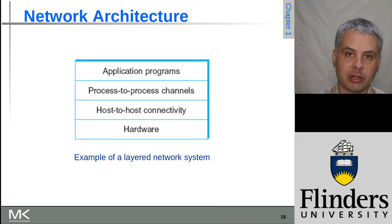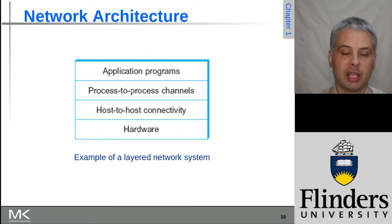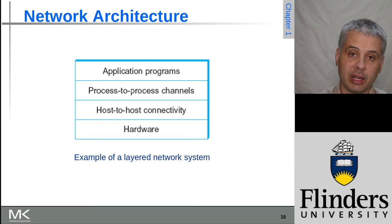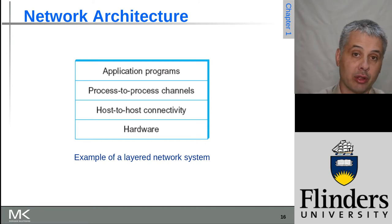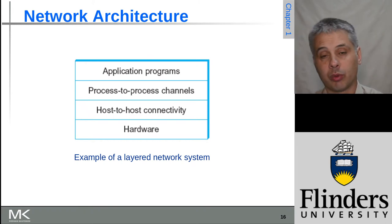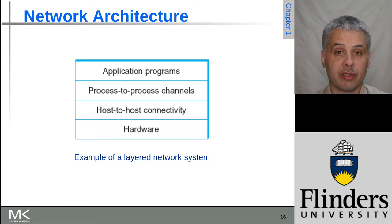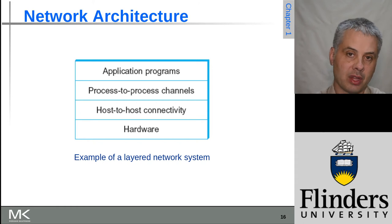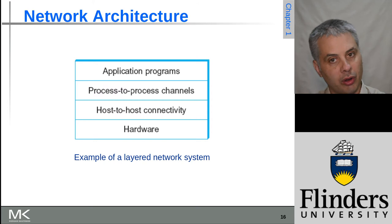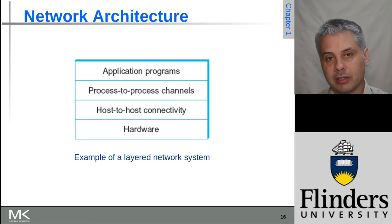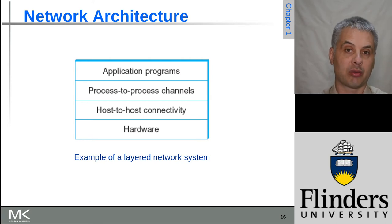The next level up is host-to-host connectivity — how we deliver communications between arbitrary pairs of hosts that might be indirectly connected via many links end to end. On top of that, we need different applications running on those computers to communicate with each other, giving us the idea of a process-to-process communications channel. Finally, we have the actual applications themselves, running on top of that channel. Each layer only needs to know about the interface of the layer directly below it.